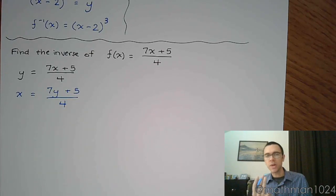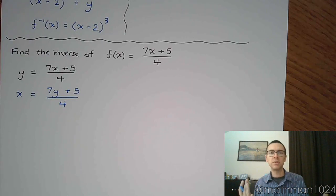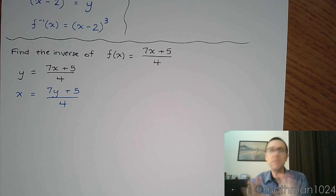Okay? So that means this becomes x is equal to 7x becomes y plus 5, and this is all divided by 4. All right. The first step of rewriting f of x as y, easy. Rewriting x as y and y as x, easy. You haven't even done anything.